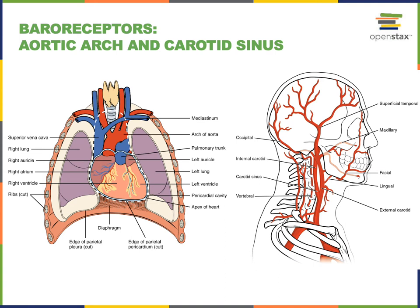The baroreceptors are sensory receptors located within the large arteries of the aortic arch and the carotid sinus. These receptors are monitoring the mean arterial pressure and relaying that information into the cardiovascular control centers in the medulla oblongata.